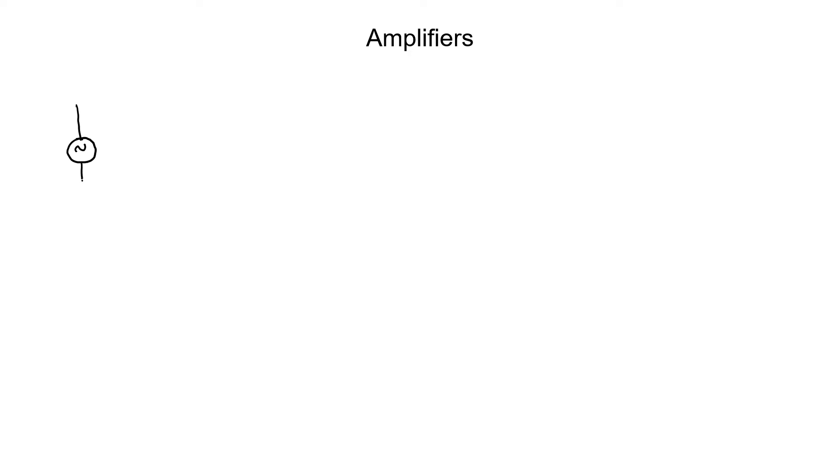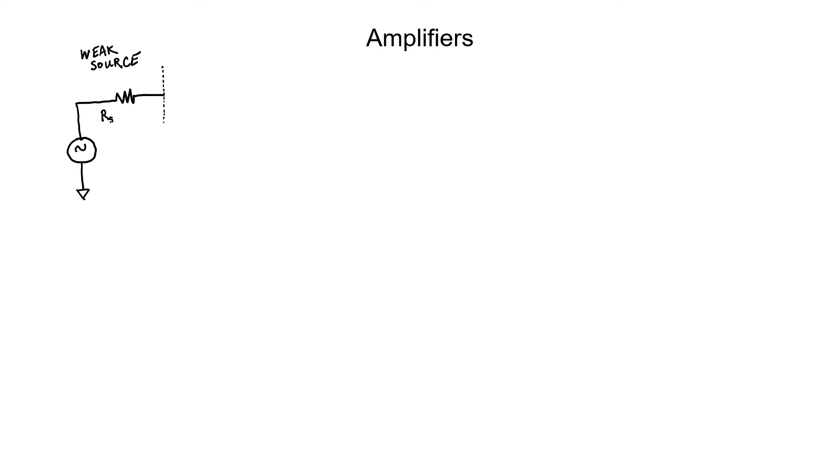First, I'd like to draw a circuit in which an amplifier might be useful. Let's imagine that we have a weak source connected to a load. I'm calling it a weak source because it has a non-zero impedance. Just for the purposes of this example, let's say it has a 1 kiloohm impedance. Let's start off by assuming that weak source is connected to a load, and let's say that the load is also 1 kiloohm.